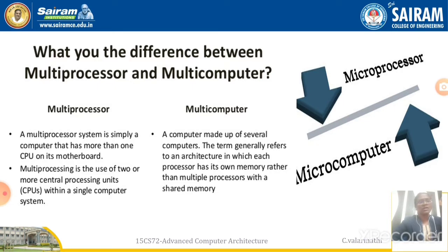In contrast, a multi-computer is made up of several computers. From the name itself we can tell it is a combination of more computers. The term generally refers to an architecture in which each processor has its own memory, rather than multiple processors with a shared memory. In multi-computers they have their own memory which is not shared, but in multi-processors they share their memories inside the architecture.